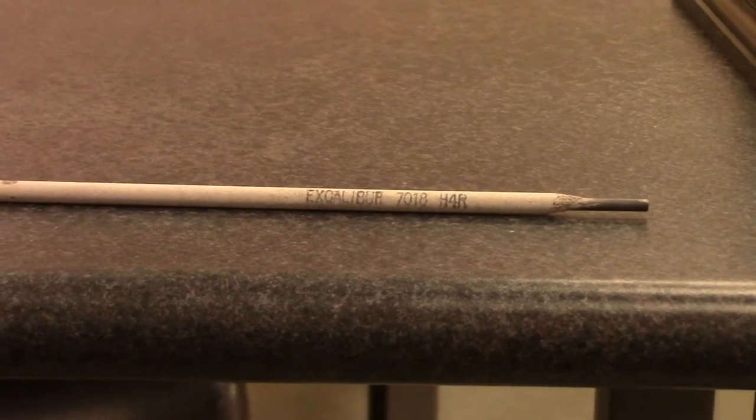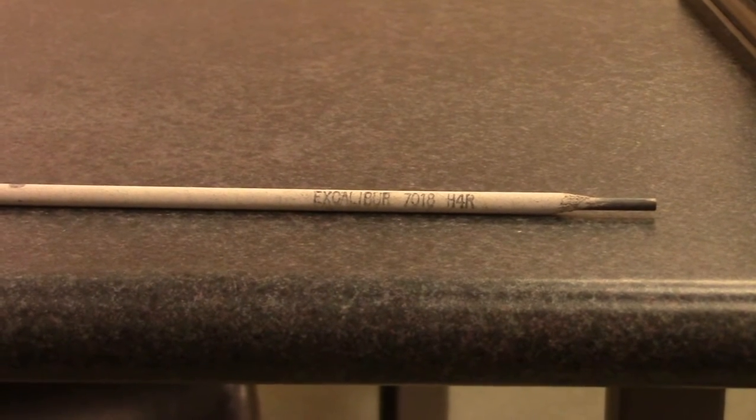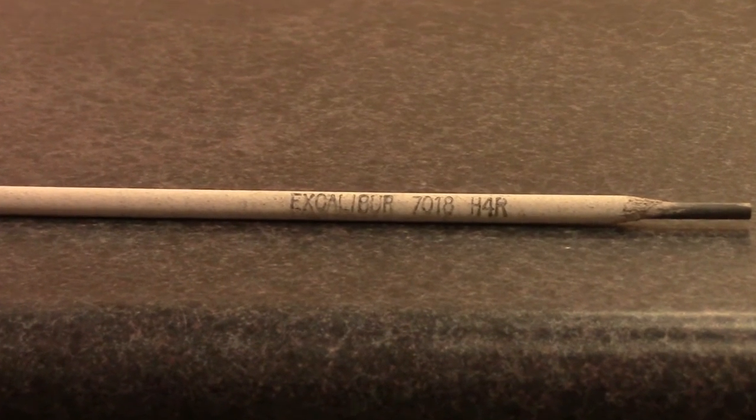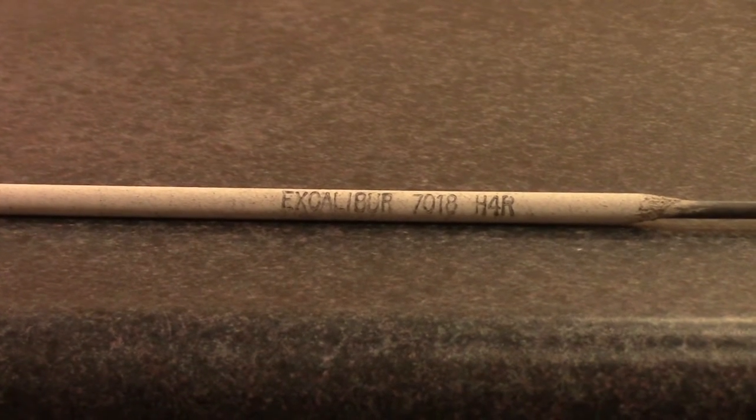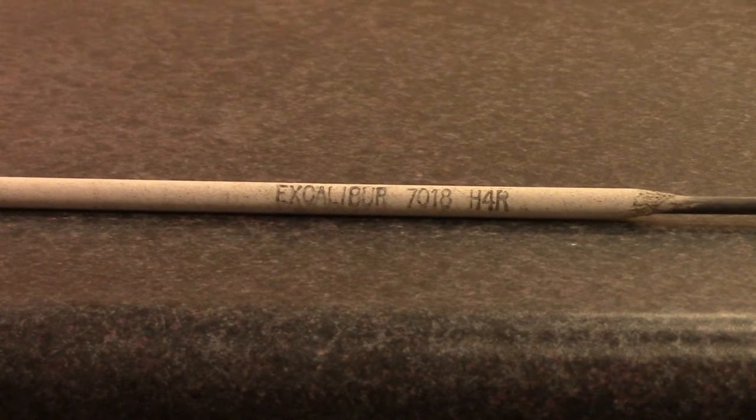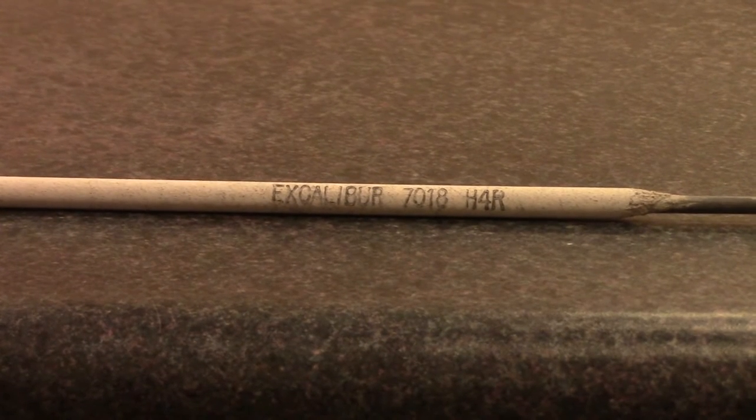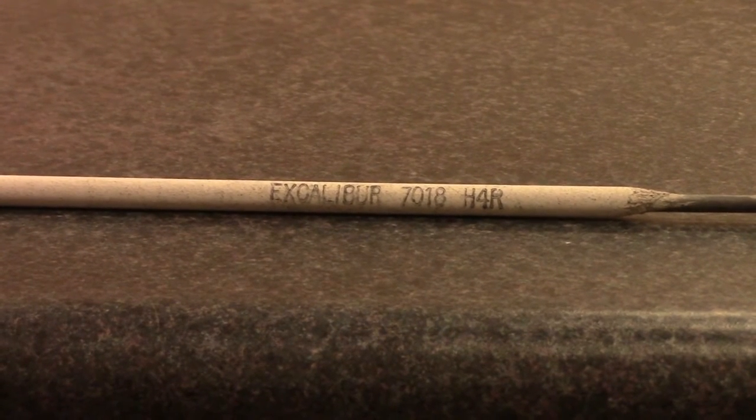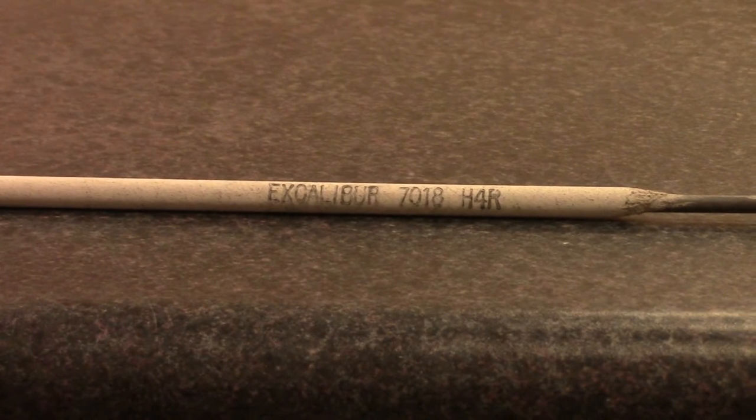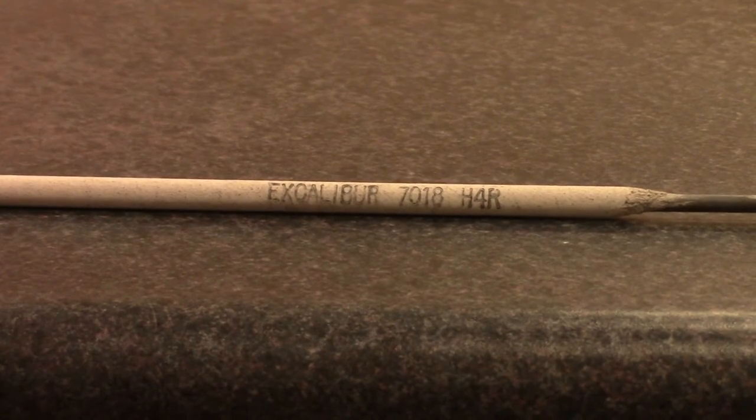So now we'll go into the 7018. This is the 7018, and you can see it's got a lot thicker of a coating on it. We're going to move in here so you can see it a little better. This is Excalibur 7018. That's a name brand made by Lincoln Electric. It's pretty common. Works really good. We've tried to get knockoffs. It just doesn't run as good. But Excalibur is just the name of the brand.